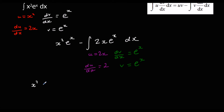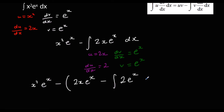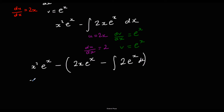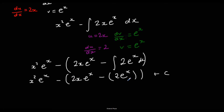We still have x²·eˣ minus, then substituting in our new integration by parts: uv gives 2x·eˣ, minus the integral of v·du/dx which is 2·eˣ with respect to x. Integrating 2·eˣ gives 2·eˣ plus c. Expanding the brackets, the final answer is x²·eˣ minus 2x·eˣ plus 2·eˣ plus c.